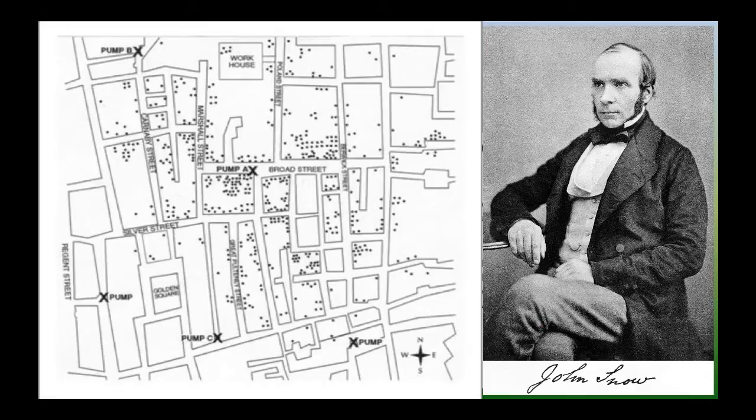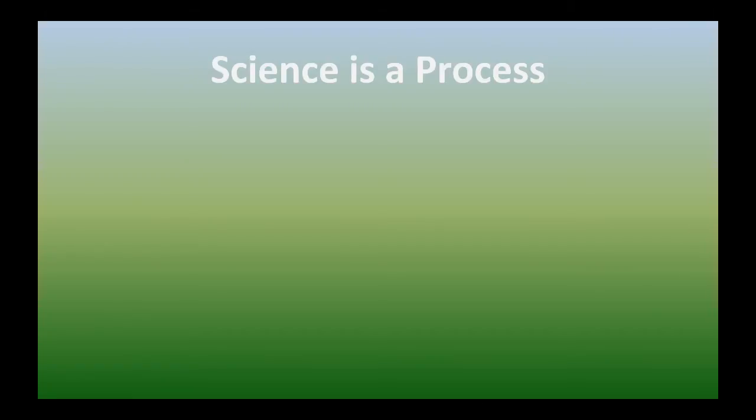And so what John Snow did was a perfect example of the scientific method because science is a process. So there's certain steps we take, and you've done this before. First, you observe and you question. So John Snow was curious, you know, why are people getting sick? What do they all have in common? There must be this common denominator.